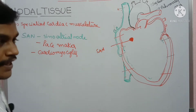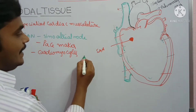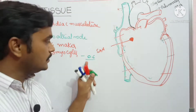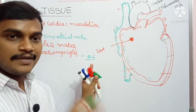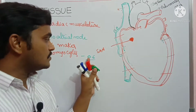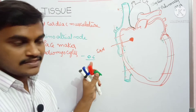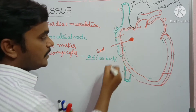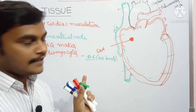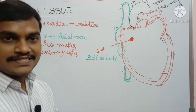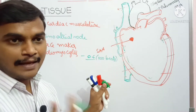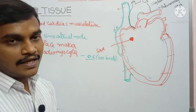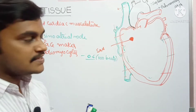These cardiomyocytes have the ability to generate action potential. The SAN can initiate an impulse every 0.6 seconds. That means in one minute it can create 100 beats in the heart. So action potential starts from the SAN, and in one minute it can create 100 beats in the heart.